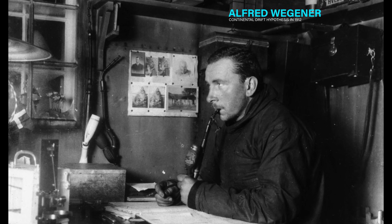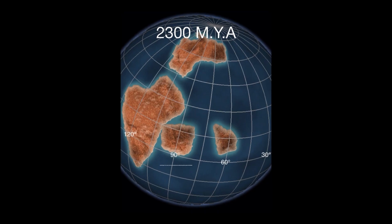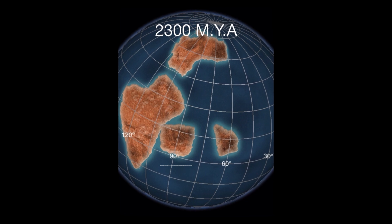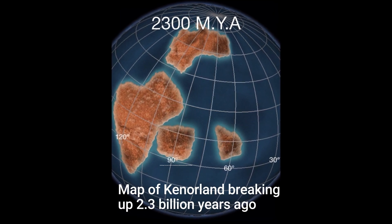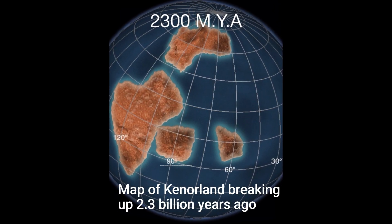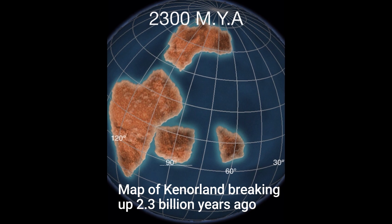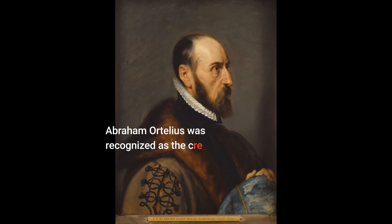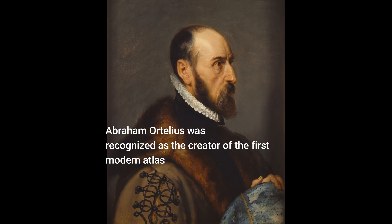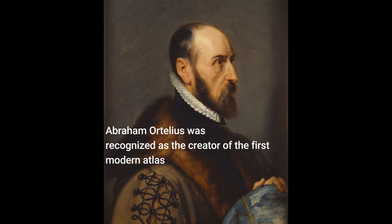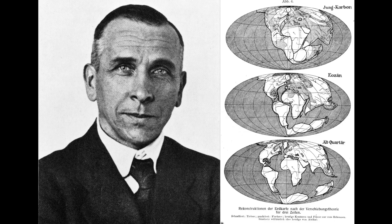Continental drift is the theory that the earth's continents have migrated relative to one another throughout geologic time, giving the appearance of drifting across the ocean floor. Abraham Ortelius originally proposed the idea that continents could have drifted in 1596. Alfred Wegener expanded on the notion in 1912, but many dismissed his hypothesis.